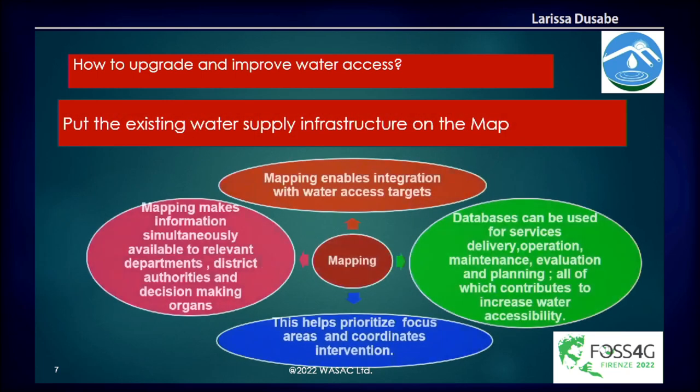Why is it important to map? In water supply systems, we need to integrate. It helps integrate with water access targets and makes information simultaneously available to relevant departments, district authorities, and decision-making organs. It helps prioritize focus areas and coordinate interventions, because with a map of all assets you can easily localize areas with low access to water infrastructure. It also helps in daily operation, maintenance, evaluation, and planning, all of which contribute to increasing water accessibility.